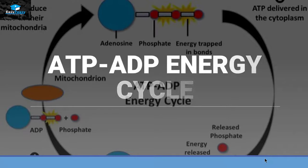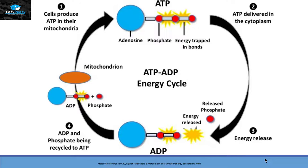Hello friends, this is Seher from Easy Peasy, and the topic we are going to discuss today is called the ATP-ADP energy cycle. This cycle has four different types of steps.